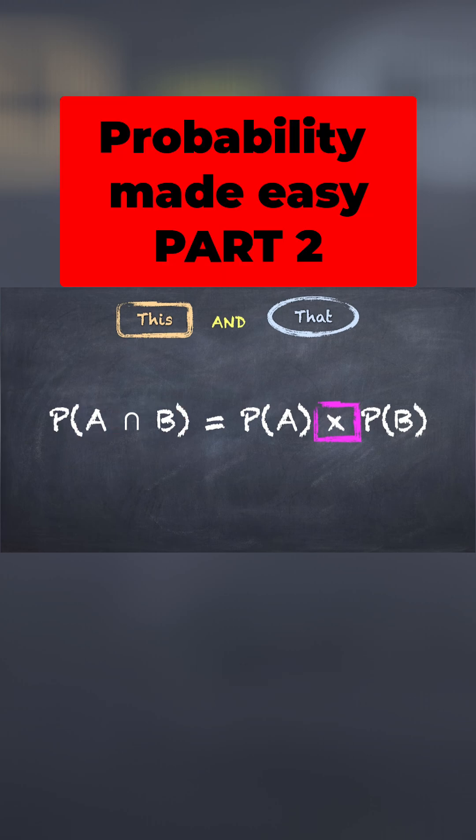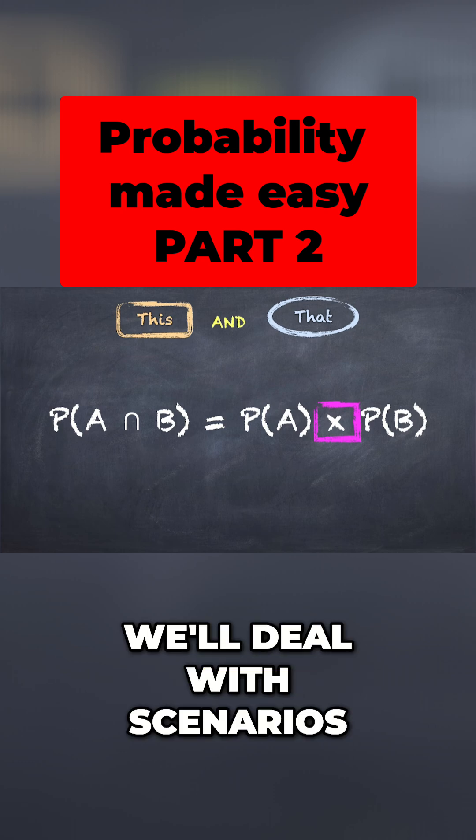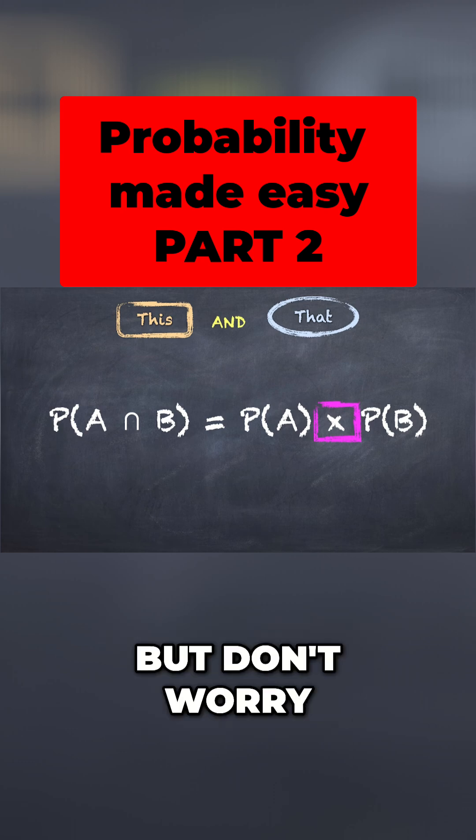A and B are independent. In other words, the fact that A happened doesn't impact on the chances of B happening. Toward the end of this video, we'll deal with scenarios where there is dependence, but don't worry about that for now.